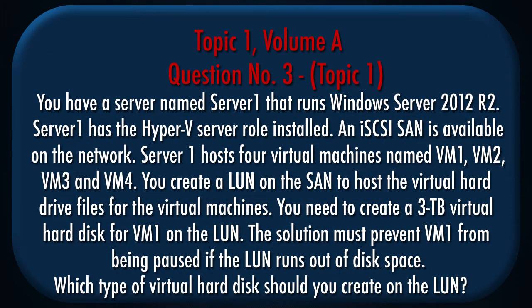Question number 3, Topic 1. You have a server named Server1 that runs Windows Server 2012 R2. Server1 has the Hyper-V server role installed. An iSCSI SAN is available on the network. Server1 hosts 4 virtual machines named VM1, VM2, VM3, and VM4. You create a LUN on the SAN to host the virtual hard drive files for the virtual machines. You need to create a 3TB virtual hard disk for VM1 on the LUN. The solution must prevent VM1 from being paused if the LUN runs out of disk space.